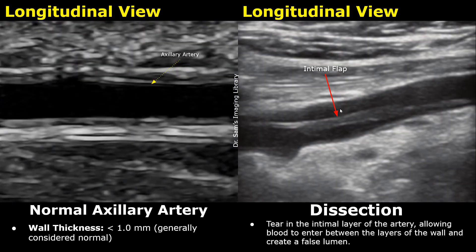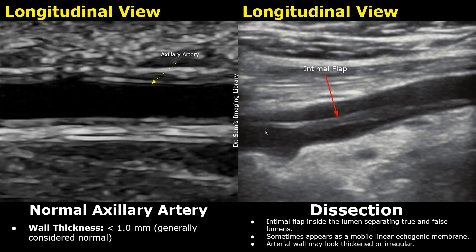Axillary artery dissection occurs when there is a tear only in the innermost layer of the artery — the intimal layer. This allows blood to enter between the layers of the wall and create a false lumen. This leads to an intimal flap floating within the arterial lumen. This flap can appear as a mobile linear echogenic band in real-time imaging, creating two lumens in the artery — one is the true lumen of the vessel, and the other is a false lumen created by this flap. So this is how a dissection appears on ultrasound.